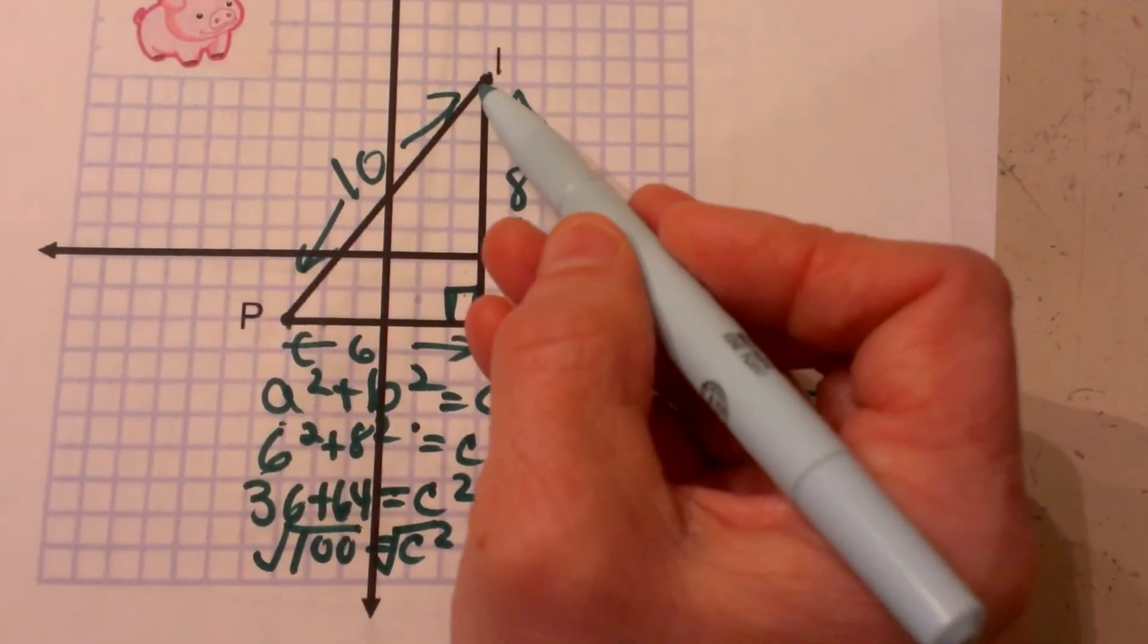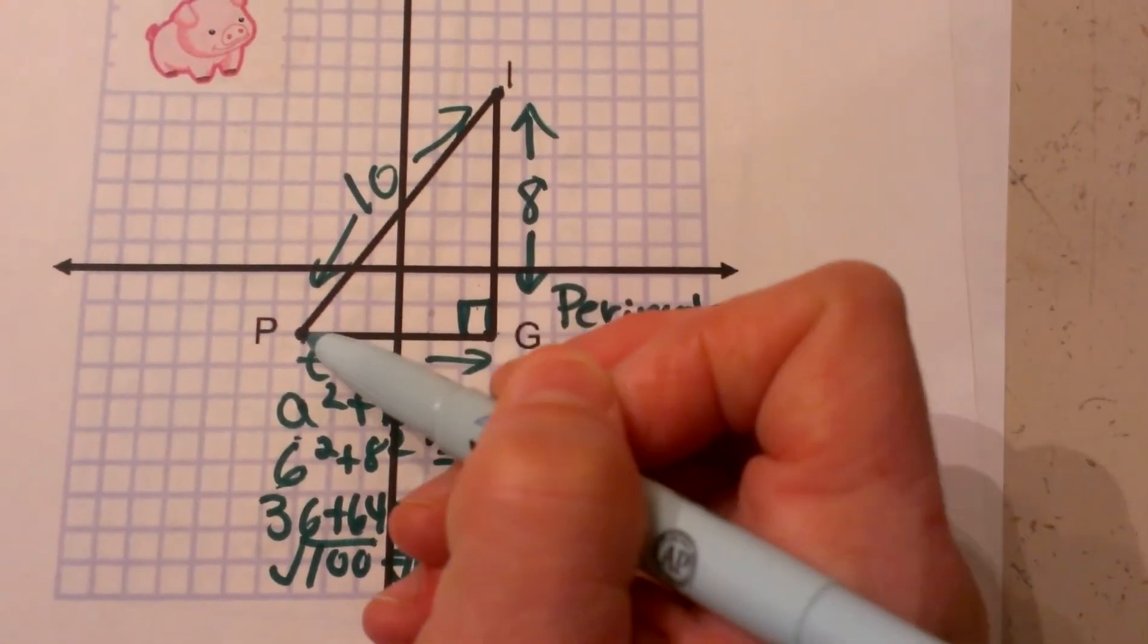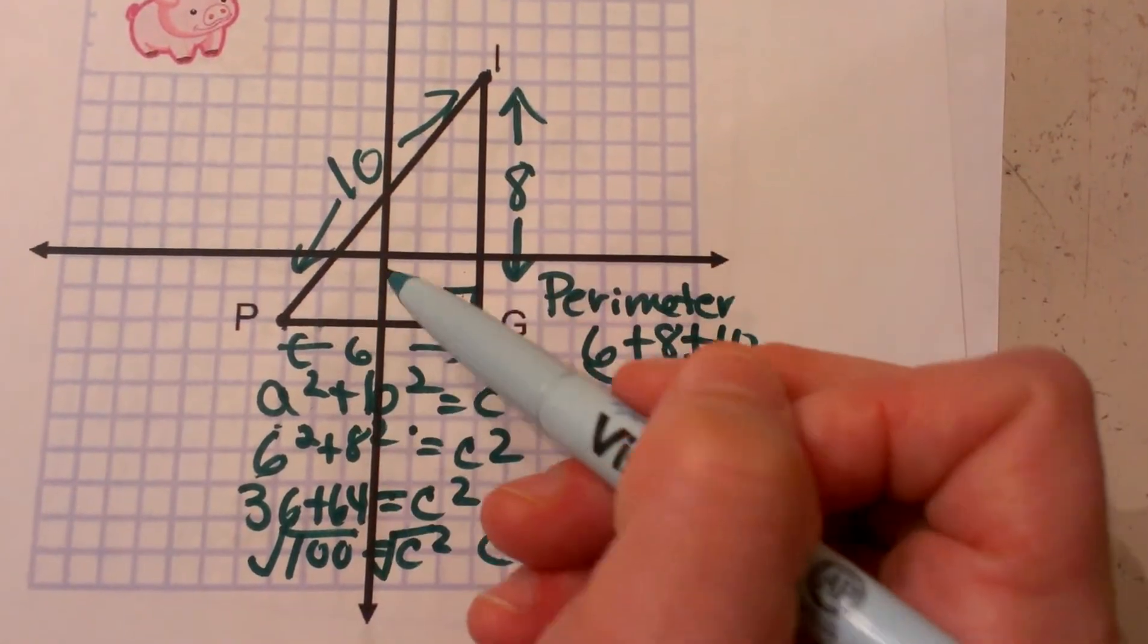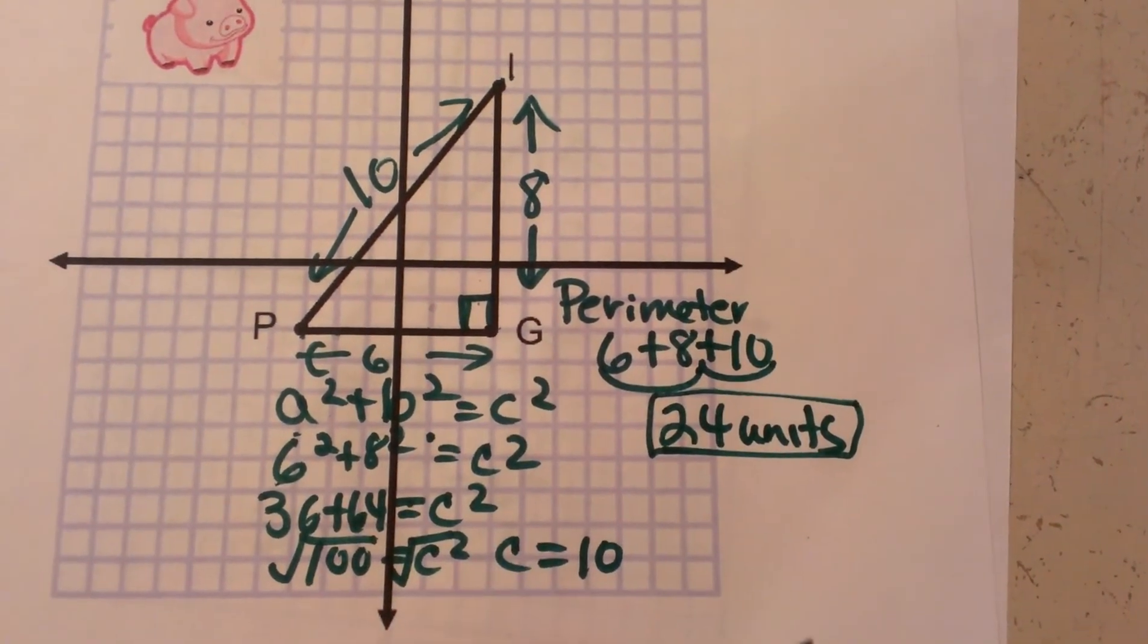Hope this video was helpful to show you how you can draw a right triangle in and find the distance just using the Pythagorean theorem.